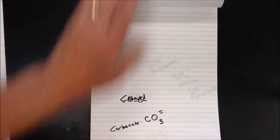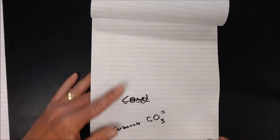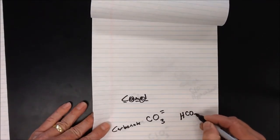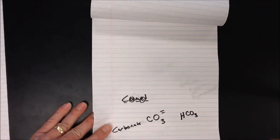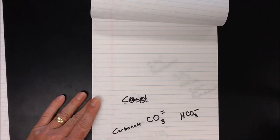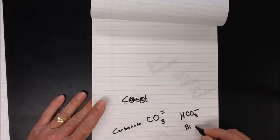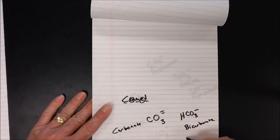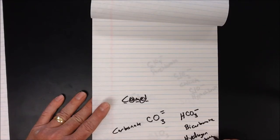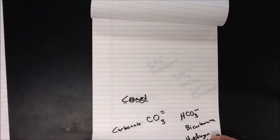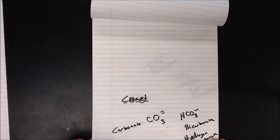There are also polyatomic ions with charges other than negative one. For carbonate, we can add a hydrogen to make HCO3. Hydrogen is in Group 1A with a plus one charge, so that polyatomic ion becomes a negative one charge. This is called bicarbonate, or more currently, hydrogen carbonate.